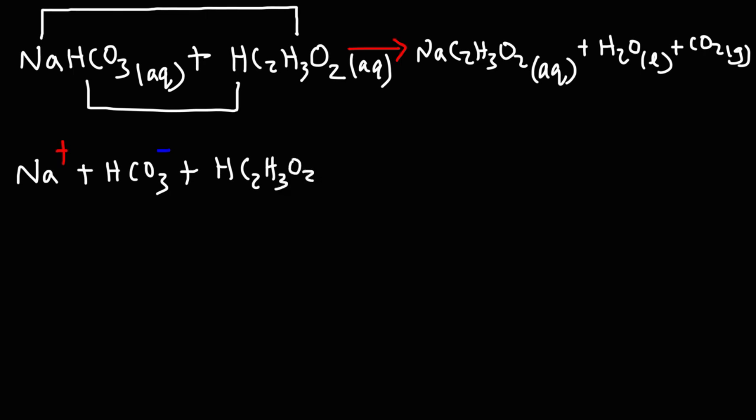So when writing net ionic equations, or rather, total ionic equations, the only stuff that you don't separate that's in the aqueous phase are weak acids and other things that don't dissociate completely.